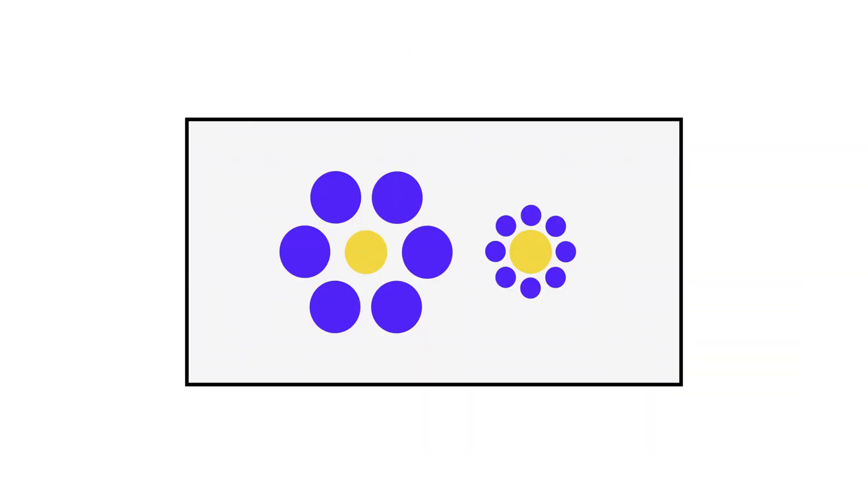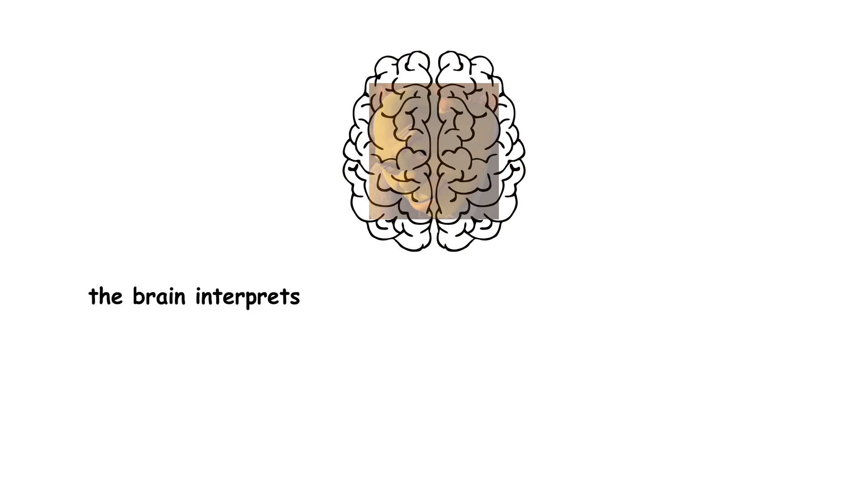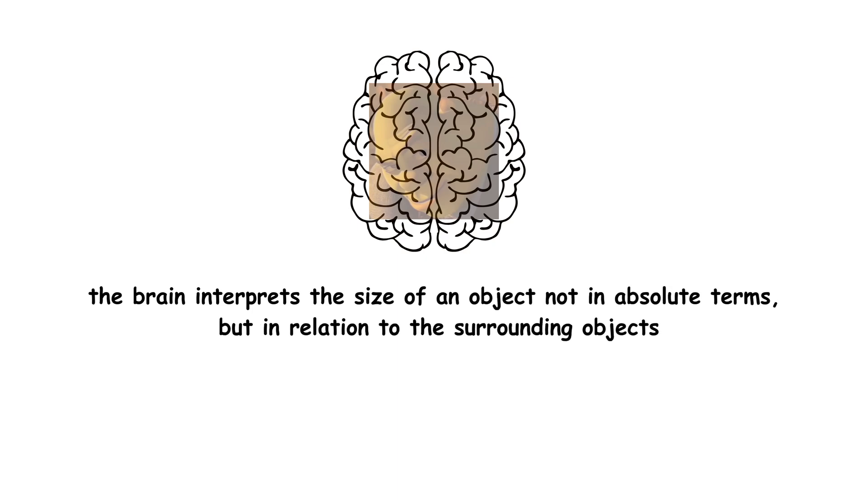The mechanism behind the Ebbinghaus Illusion is based on contextual contrast. The brain interprets the size of an object not in absolute terms, but in relation to the surrounding objects.